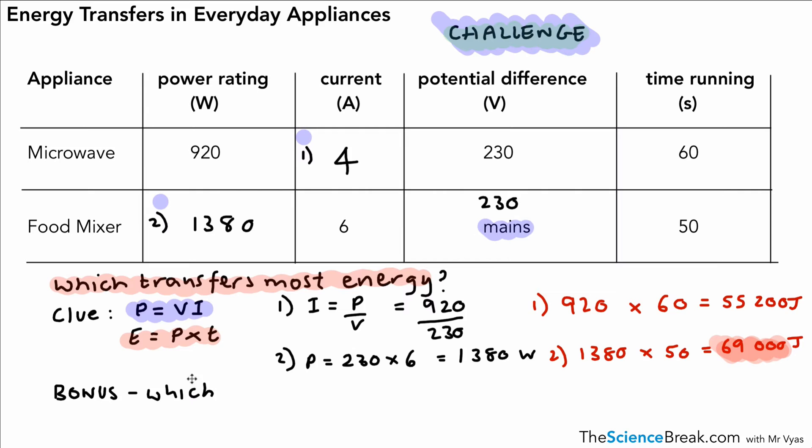For a bonus, have a think about this. Which fuse would go in the plug that powers the microwave and the food mixer, based on their currents? We have a choice of a 3 amp fuse, a 5 amp fuse, or a 13 amp fuse. Now the important thing to remember is that when we have a 3 amp fuse, that means that the fuse will blow if the current goes above 3 amps. Same with the 5 amp fuse, if the current goes above 5 amps, it will blow. And the same for the 13 amp fuse. If the current goes above 13 amps, that will blow, or we should say melt.